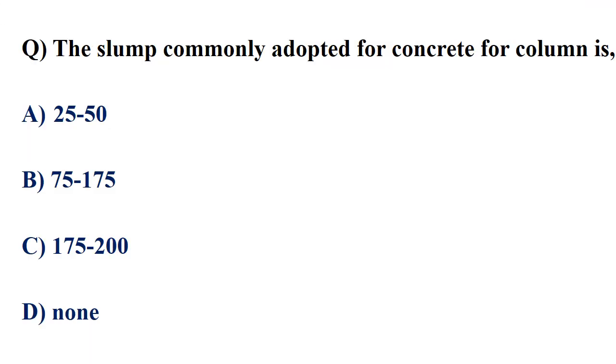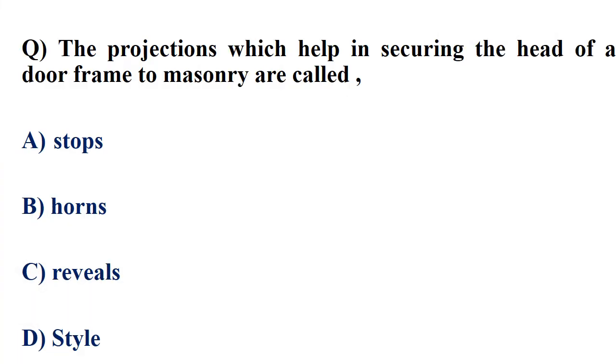The slump commonly adopted for concrete for columns - the answer is 75 to 175.